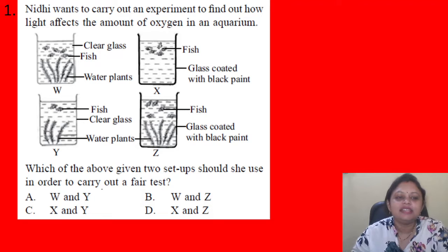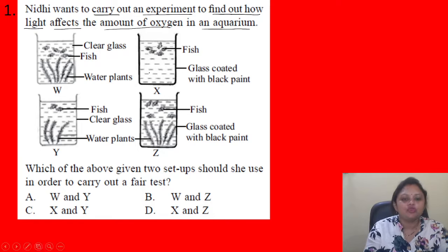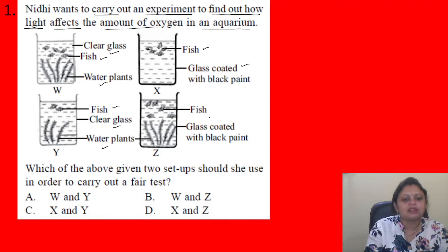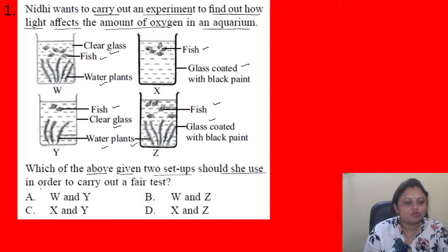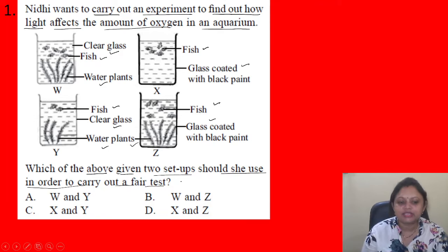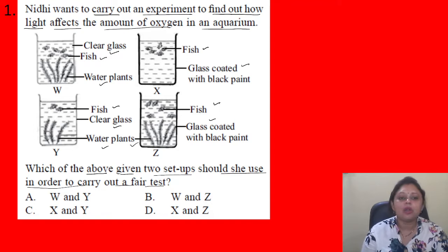Our first question: Nidhi wants to carry out an experiment to find out how light affects the amount of oxygen in an aquarium. Four figures are given — W: clear glass, fish, water plant; X: fish, glass coated with black paint; Y: fish, clear glass, water plant; Z: fish, glass coated with black paint and water plant. Which two setups should be chosen to carry out a fair test? Options: A) W and Y, B) W and Z, C) X and Y, D) X and Z.